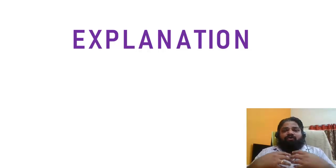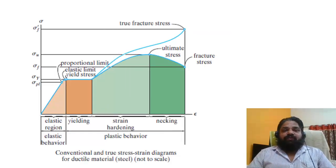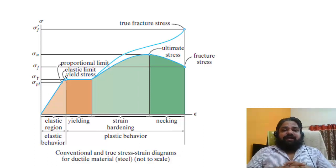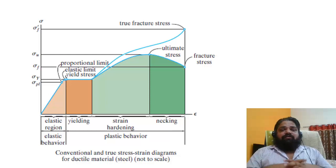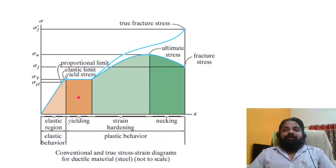There are various contradictory statements and some simple statements you can find on the stress-strain diagram. Based on my understanding from reviewing available materials, I want to discuss this. The stress-strain diagram we have already discussed has four different zones from zero loading up to fracture: elastic region, yielding, strain hardening, and necking.